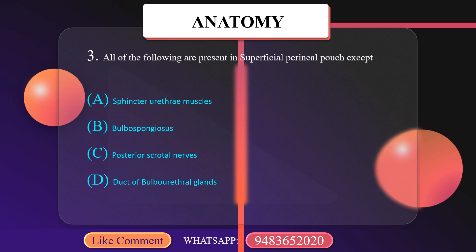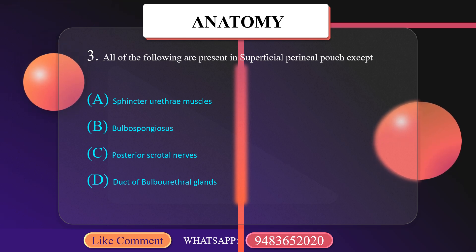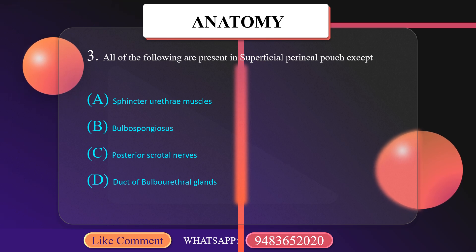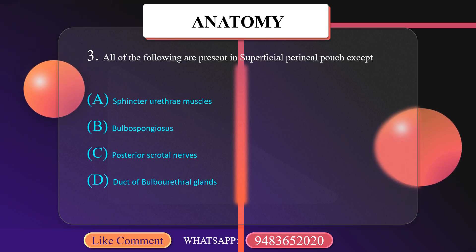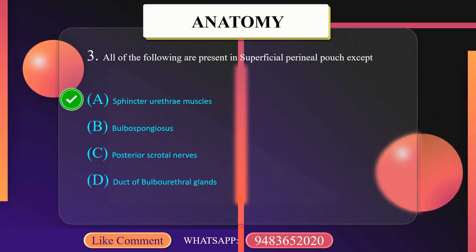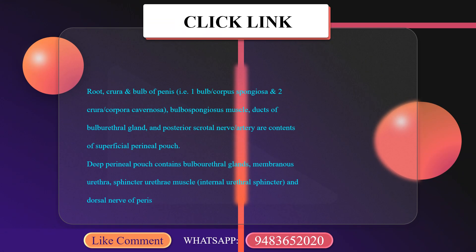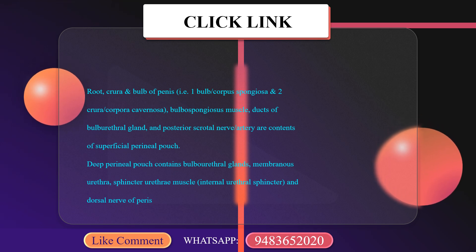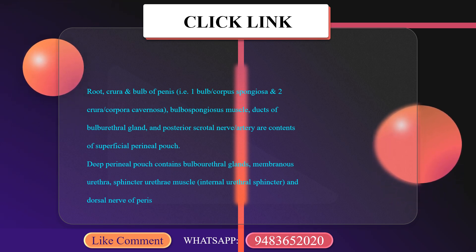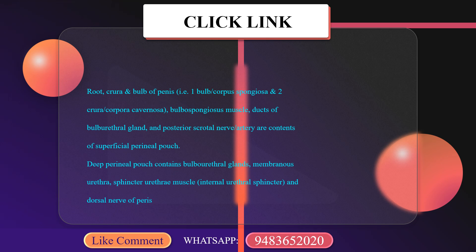All of the following are present in the superficial perineal pouch. The correct option here is sphincter urethrae muscle. The contents of the superficial perineal pouch are: root, crura and bulb of penis, bulbospongiosus muscles, ducts of bulbourethral glands, and posterior scrotal nerve.